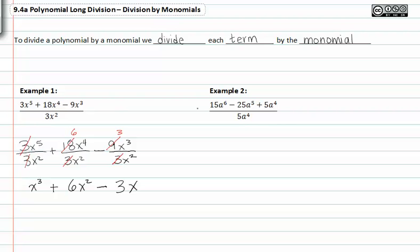In example two, we have a similar type of problem. There's only one term in the denominator but three in the numerator. So we're going to break up the different terms in the numerator and divide them all by the same five a to the fourth.